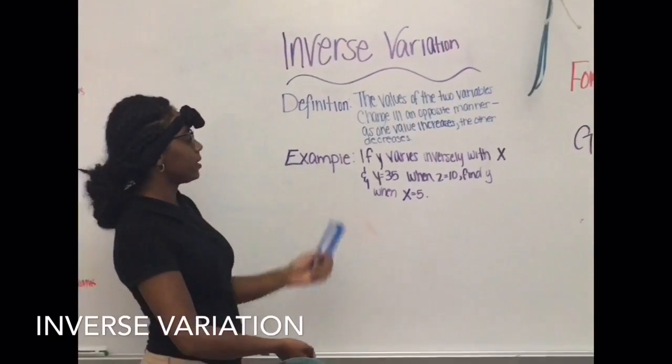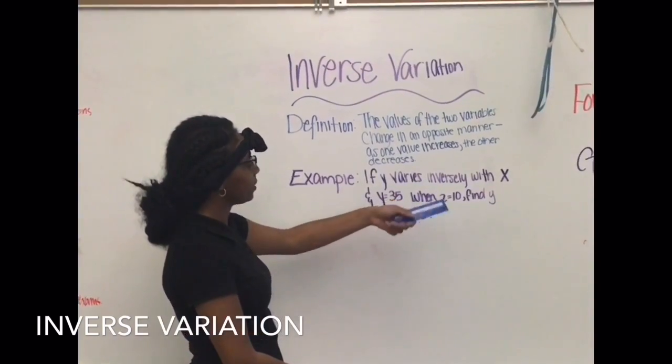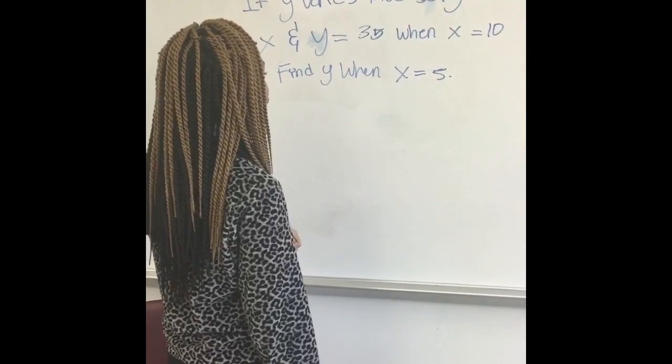If y varies inversely with x, and y equals 35 when x equals 10, find y when x equals 5.